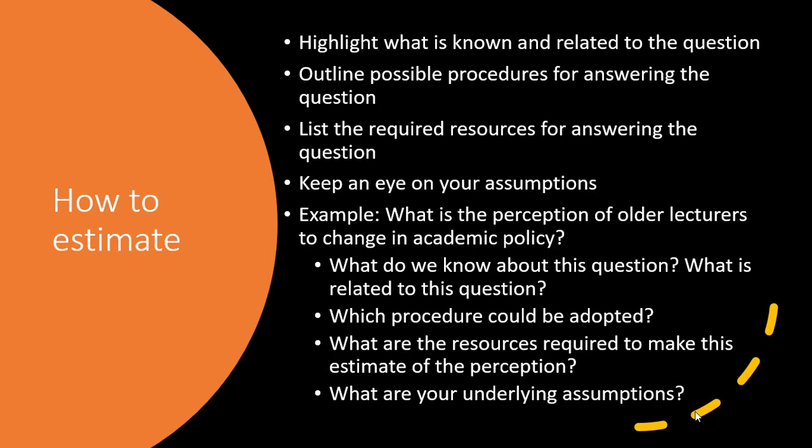Before you go on, remember four steps to keep in mind. First, know what is known. Second, outline the possible procedures you are going to use to carry out your estimation. Third, identify what resources you are going to use. Fourth, always keep your assumptions clear — and in writing up your work, you must also indicate what your assumptions are. Once you have all of that put together, you can do your estimation.